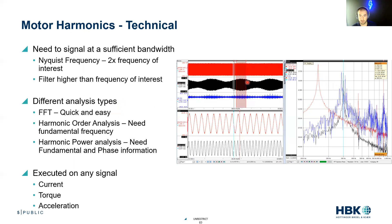We can see my torque ripple and my accelerometer have some content as well. I show this because we can do these types of analyses on any signal - on current, on torque, on acceleration. We can do all these analysis types on all these different signals. We can do an FFT, which is that fast Fourier transform, which is just a quick snapshot. We can do harmonic order analysis where we need to know the fundamental frequency. And we can do harmonic power analysis where we can actually look at the power content of each harmonic.